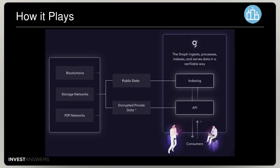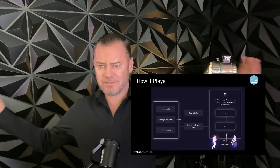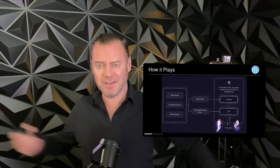The Graph analyzes and gathers blockchain data before storing it into various indices called subgraphs, allowing any application to send a query to its protocol and receive an immediate response. Simple.